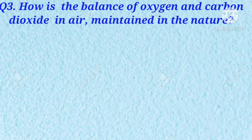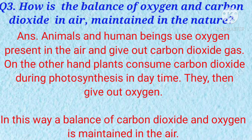Question three is, how is the balance of oxygen and carbon dioxide in air maintained in nature? Answer: animals and human beings use oxygen present in the air and give out carbon dioxide gas. On the other hand, plants consume carbon dioxide during photosynthesis in daytime and then give out oxygen. In this way, a balance of carbon dioxide and oxygen is maintained in air.